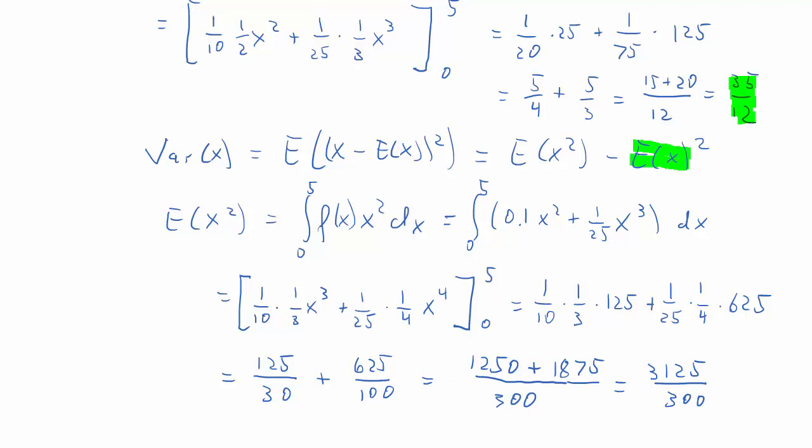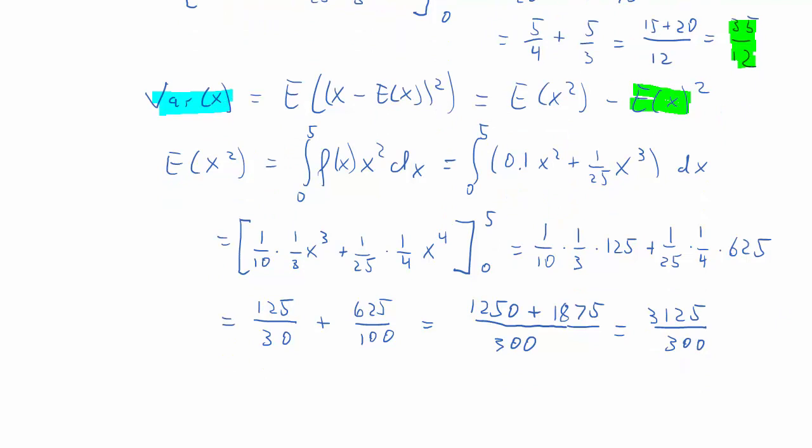Now recall, this was only a piece of the jigsaw. We wanted to calculate the variance of X. We already had the expected value of X. And what we just did is we calculated the expected value of X squared. That bit of the variance formula, and we got this result. So we just got to plug this back into the variance formula.